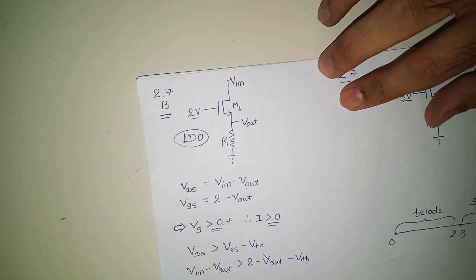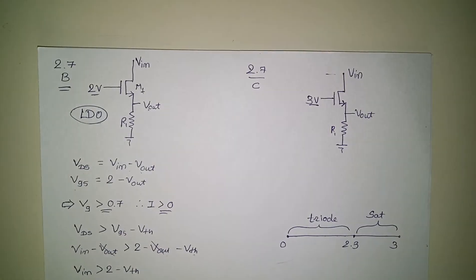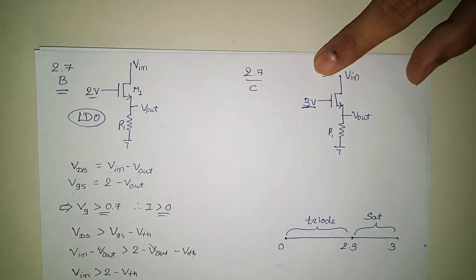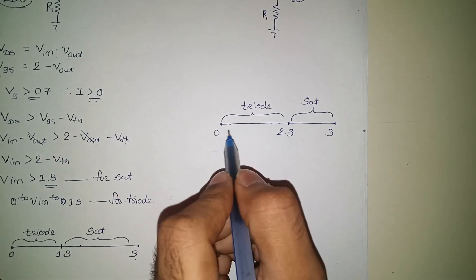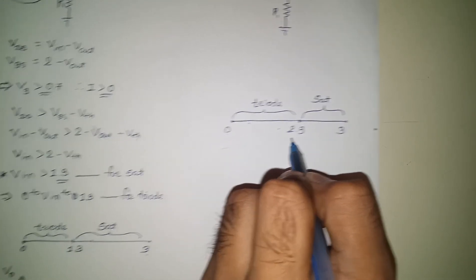Same circuitry is given here, except the gate voltage is 3 volts. So here what will change? The triode range will change from 0 to 2.3. Previously it was 1.3.